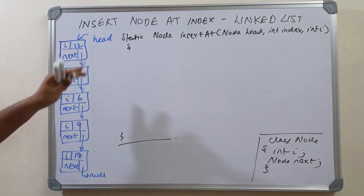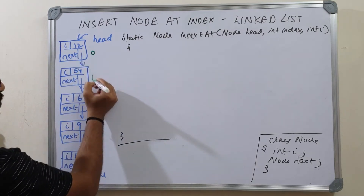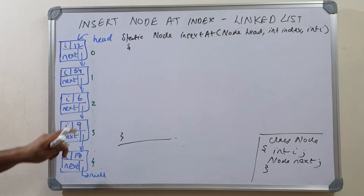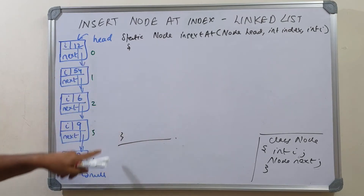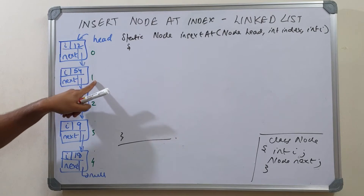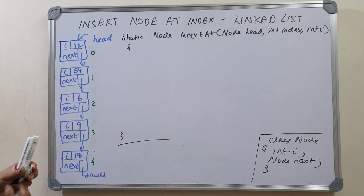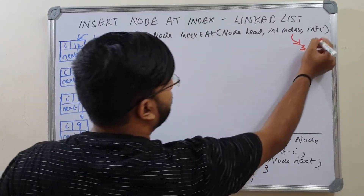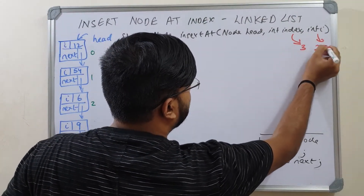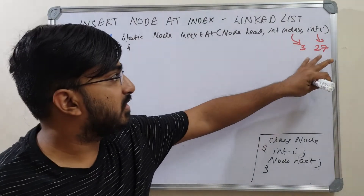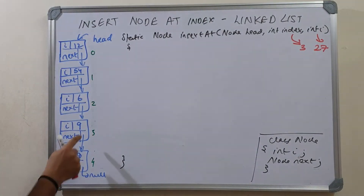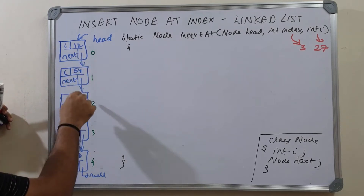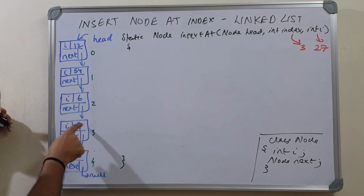If you observe this linked list, your indices are going to be 0, 1, 2, 3, 4. So this linked list has five nodes; the indices of the nodes are 0, 1, 2, 3, 4. Node at index 0 has value 12, node at index 1 has 54, and so on. Suppose our index is 3 and the value to be inserted is 27. So you have to insert value 27 at index 3 — the list should be 12, 54, 6, 27, 9, and 18.